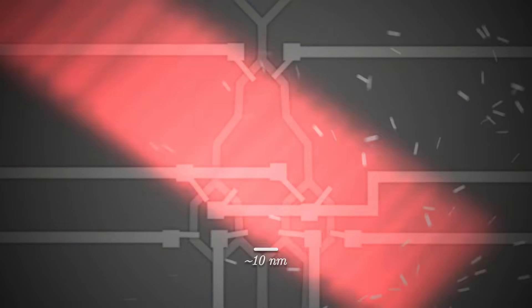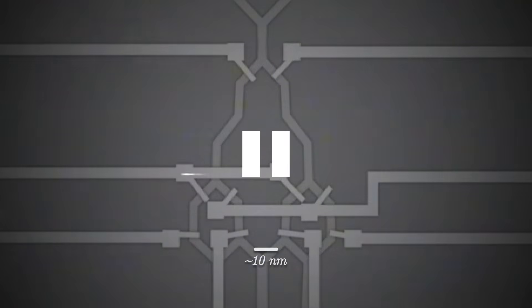FIB can even be used as a nano 3D printer to create structures in the nanoscale around one billionth of a meter in size. But how does an FIB work?